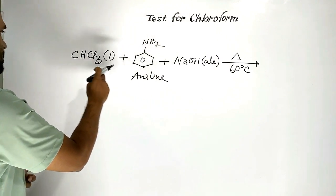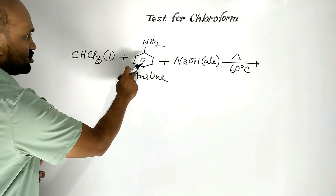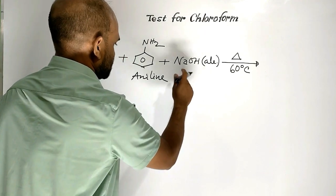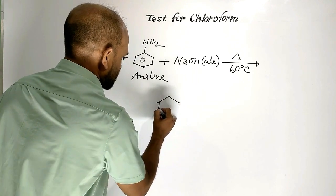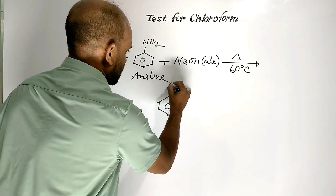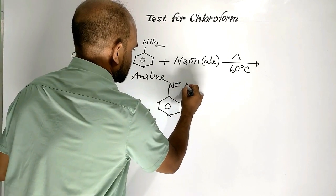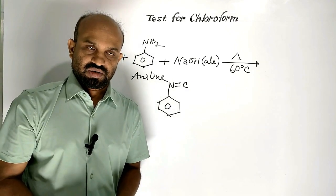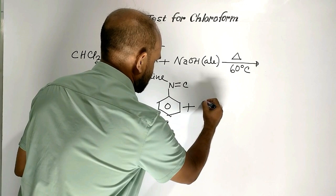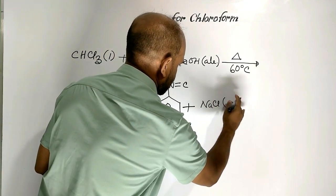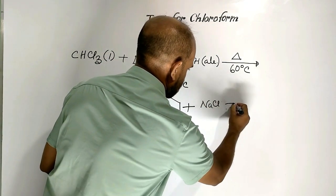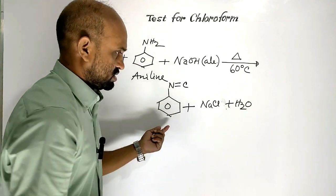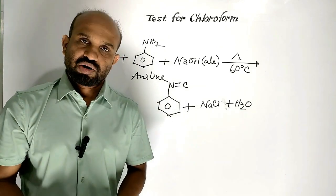As a result, chloroform reacting with aniline in presence of alcoholic sodium hydroxide forms Phenyl isocyanide, which is responsible for unpleasant smell. Here, by-products are sodium chloride and water. Phenyl isocyanide is responsible for foul smell.